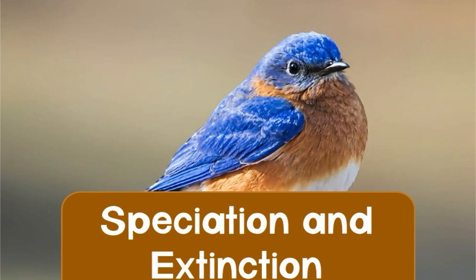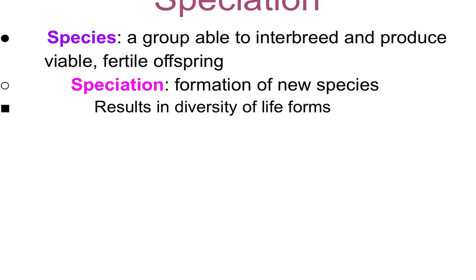Speciation and extinction. A species is defined as a group that is able to interbreed and produce offspring that can also interbreed. Their young must be viable and fertile. Speciation is the formation of a new species, and this results in the diversity of all the life forms on earth.